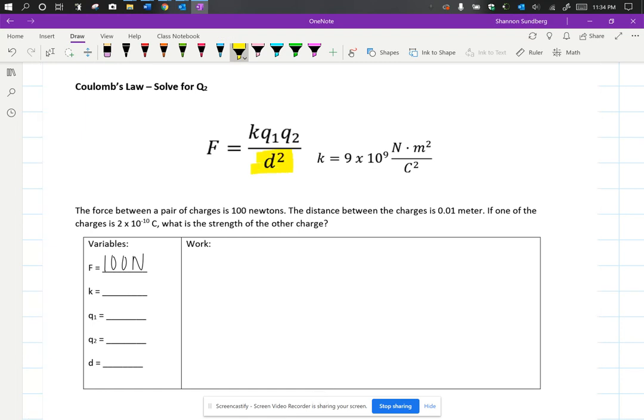So don't write that on the line. Square that inside your calculator. And when you do that, you are going to get that the distance squared is 1 times 10 to the negative 4th meters squared. And I'm just going to cross that off here so I don't accidentally look at it and use it and goof myself up later on.